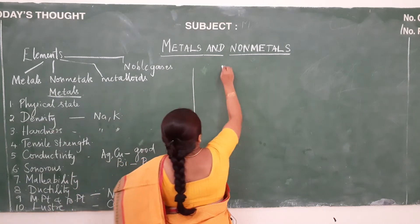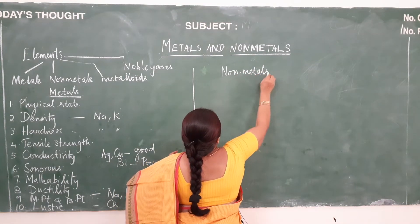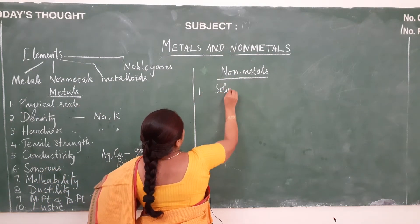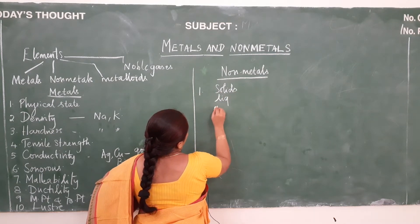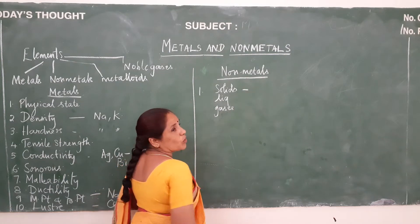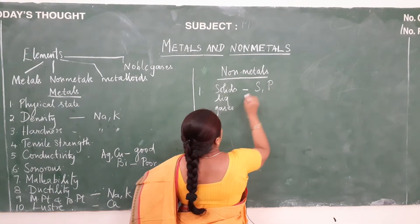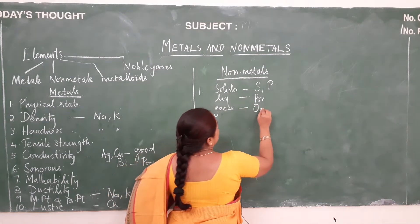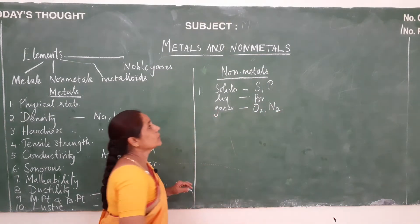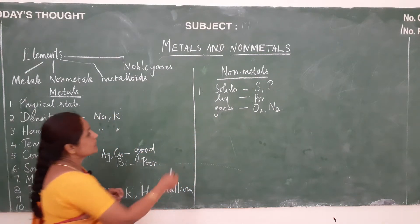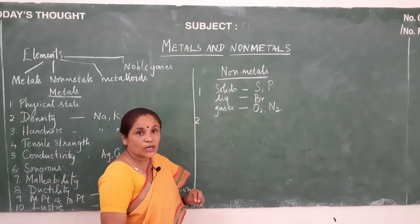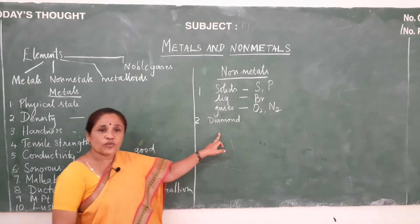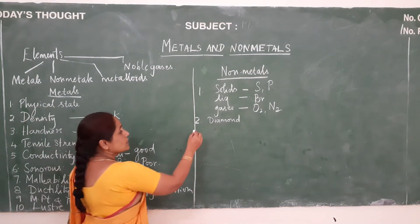Next we will see about nonmetals. The first property is physical state. Nonmetals exist as solids, liquids, and gases. Solid nonmetals: sulfur and phosphorus. Liquid nonmetal: bromine. Gaseous nonmetals: oxygen and nitrogen. The second property is density. Nonmetals have very low density, except for diamond. Diamond has high density and is an allotrope of carbon, so diamond is highly dense.